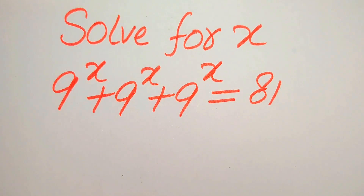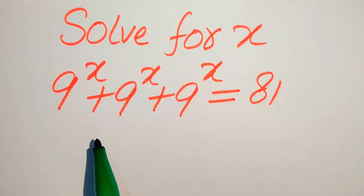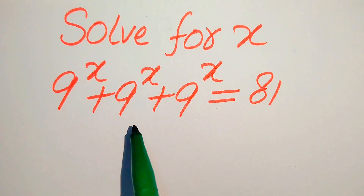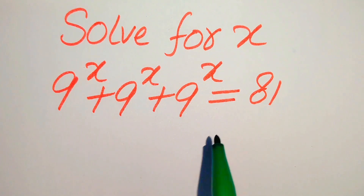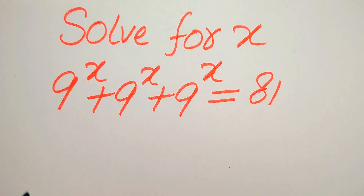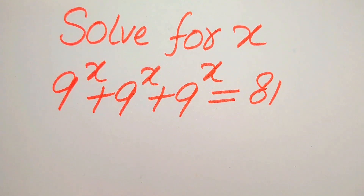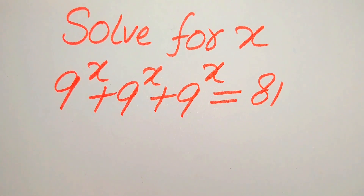Hello everyone. How to solve this problem for the values of x if we have 9 to the power of x plus 9 to the power of x plus 9 to the power of x equals 81, and we solve this problem for all the values of x. First we will find all the roots of this equation, and at the last we will check which roots satisfy the equation and which are extraneous roots. I will also explain the term extraneous root.